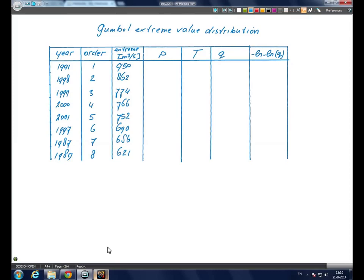This is possible when a Gumbel extreme value analysis applies. Let us look at the data. We have ordered the annual extremes in descending order.